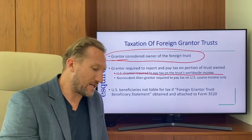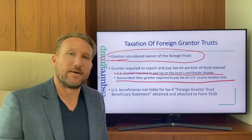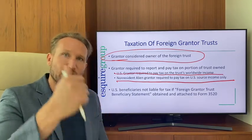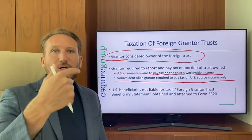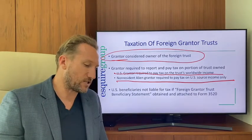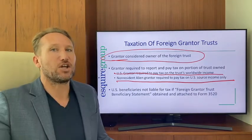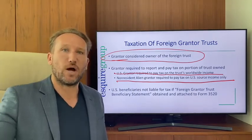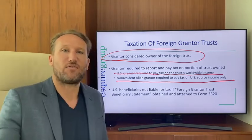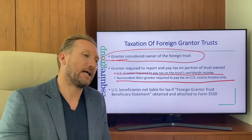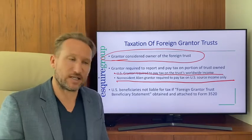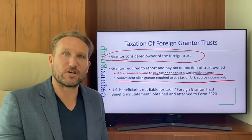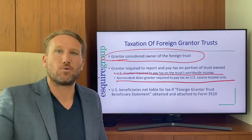If you have a non-resident alien grantor — someone who's not a U.S. citizen, not a green card holder, and doesn't meet the substantial presence test — because they're not a U.S. person, they would only be required to pay tax on U.S. source income. They would file a Form 1040-NR and report the trust's income on their individual tax return as if they owned the trust assets.